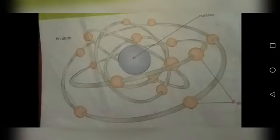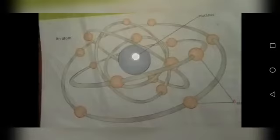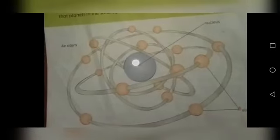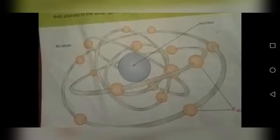اب electrons کے بارے میں پہلے میں آپ کو بتاؤں گی. یہ آپ کے سامنے picture ہے جو آپ پہلے بھی last chapter میں دیکھ چکے ہیں. ہم نے وہاں پہ بھی یہ atom کی picture دیکھی تھی. کسی بھی object میں atom ہر جگہ موجود ہوتا ہے. atom کا جو midpoint یعنی center ہوتا ہے، یہ blue color میں آپ کے سامنے ہے، اسے ہم بولتے ہیں nucleus.